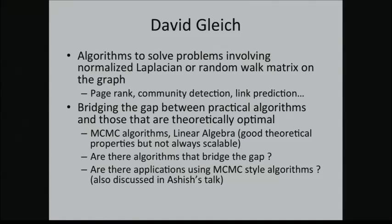David is going to talk primarily about algorithms that involve the normalized Laplacian in a random walk matrix computation on graphs. He also focuses heavily on PageRank, community detection, and link prediction problems. David is more focused on asking: can we bridge the gap between practical algorithms and those that are theoretically optimal?